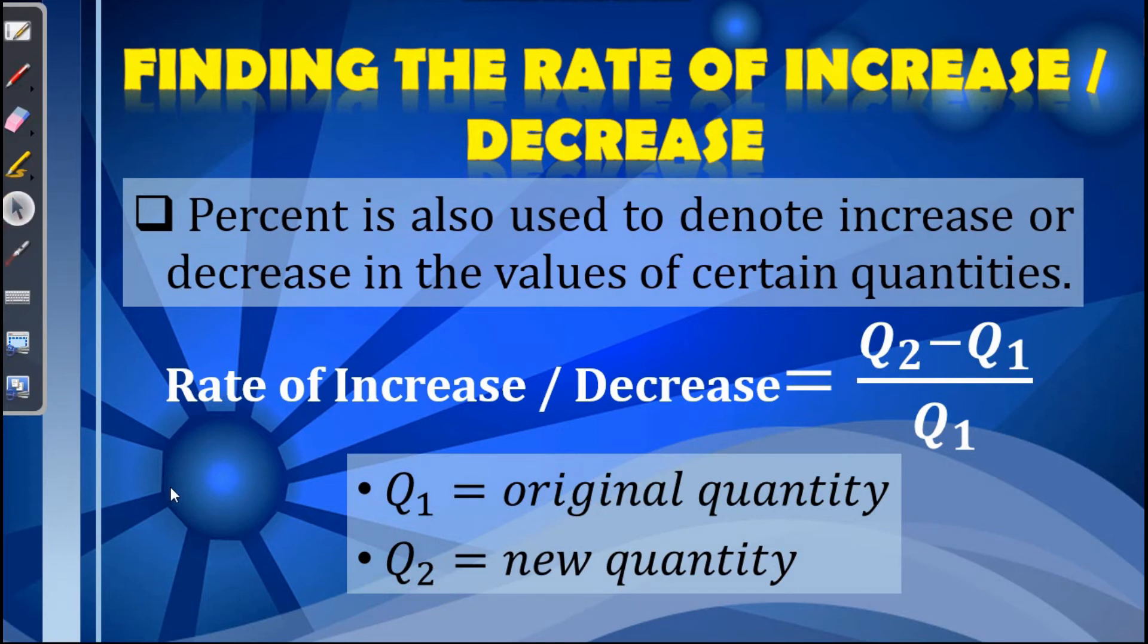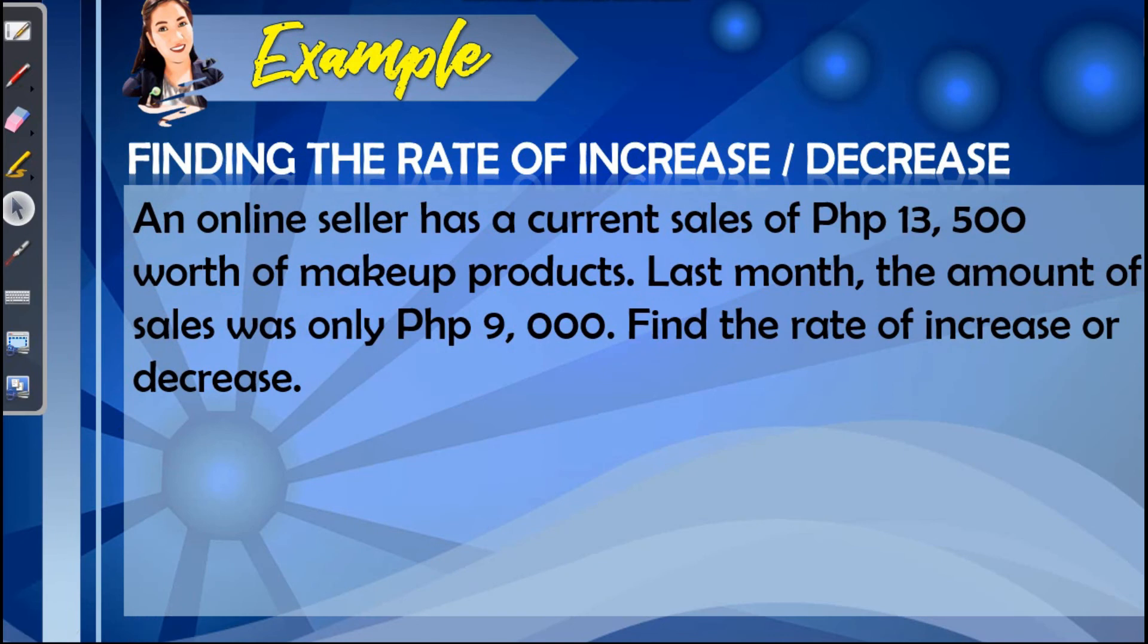Let us now have an example. An online seller has a current sales of 13,500 worth of make-up products. Last month, the amount of sales was only 9,000. Find the rate of increase or decrease. In this problem, the 13,500 is our new quantity, or the Q sub 2. And the 9,000 is our Q sub 1.